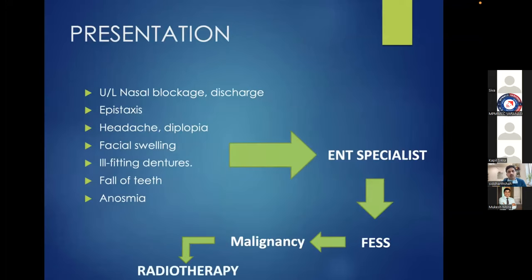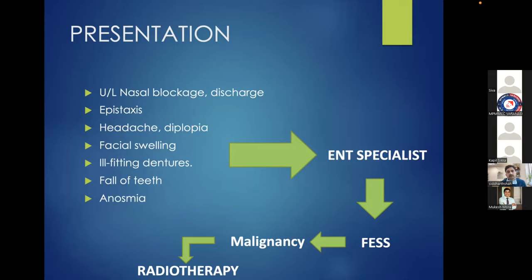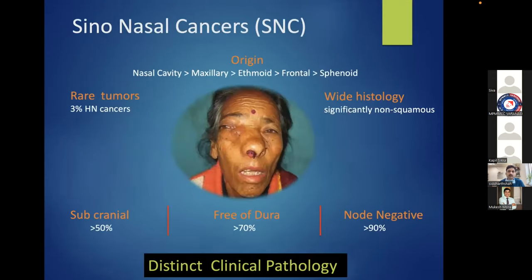These lesions generally share common rhinonasal complaints, and patients typically go to an ENT specialist. On plain scan, soft tissue is often reported as polyps; the patient undergoes FESS and the final report turns out to be malignancy, after which they are subjected to radiotherapy. The main problem is inadequate evaluation before treatment—resulting in unplanned surgery—so margins cannot be revised nor the tumor resected further.